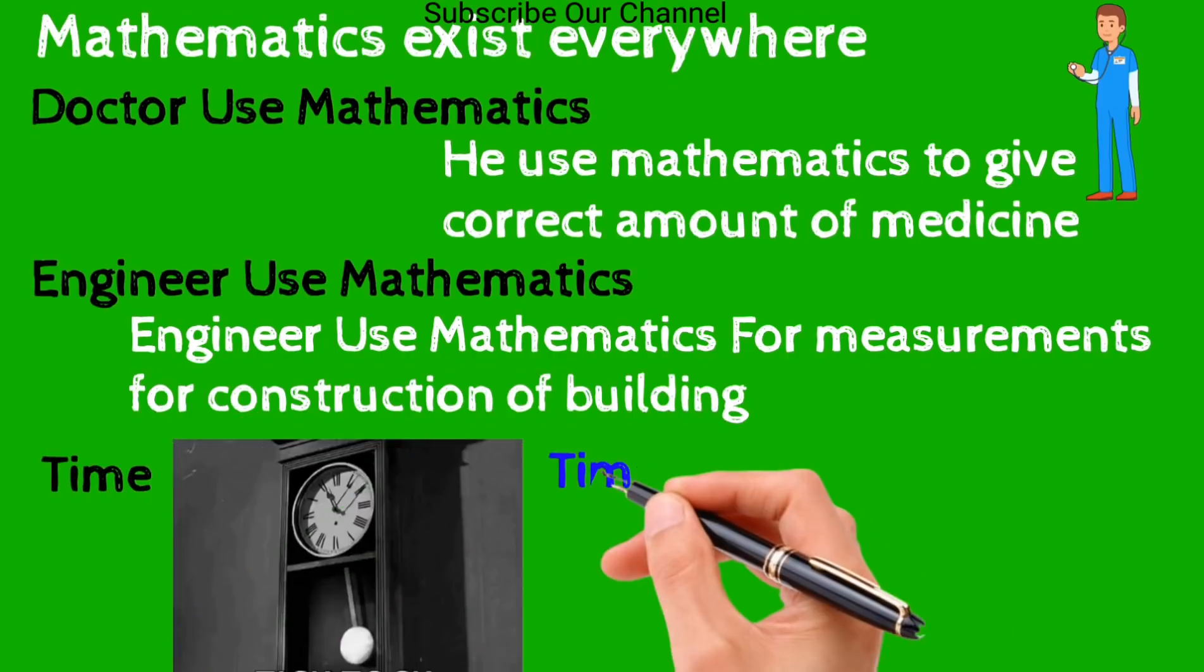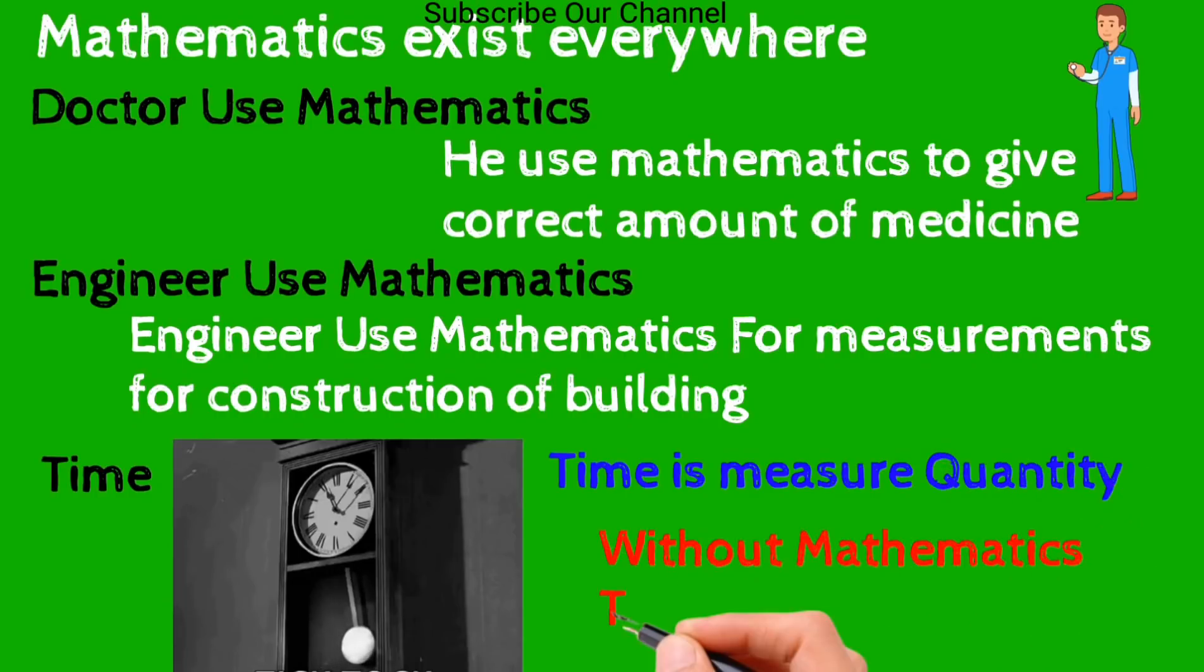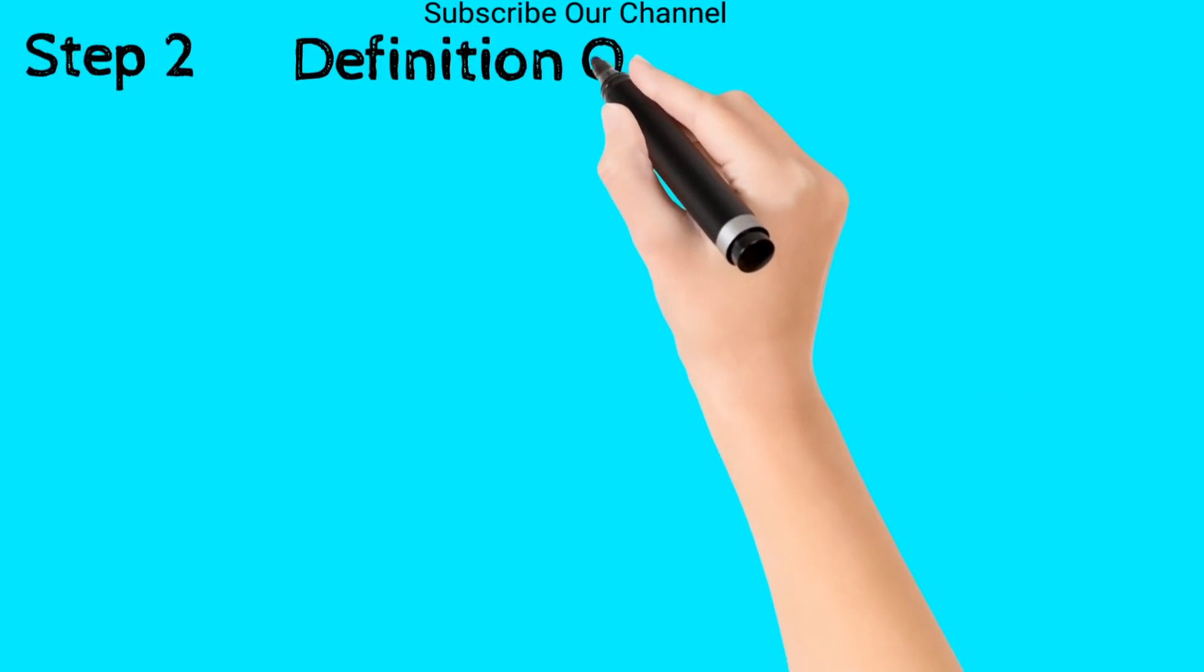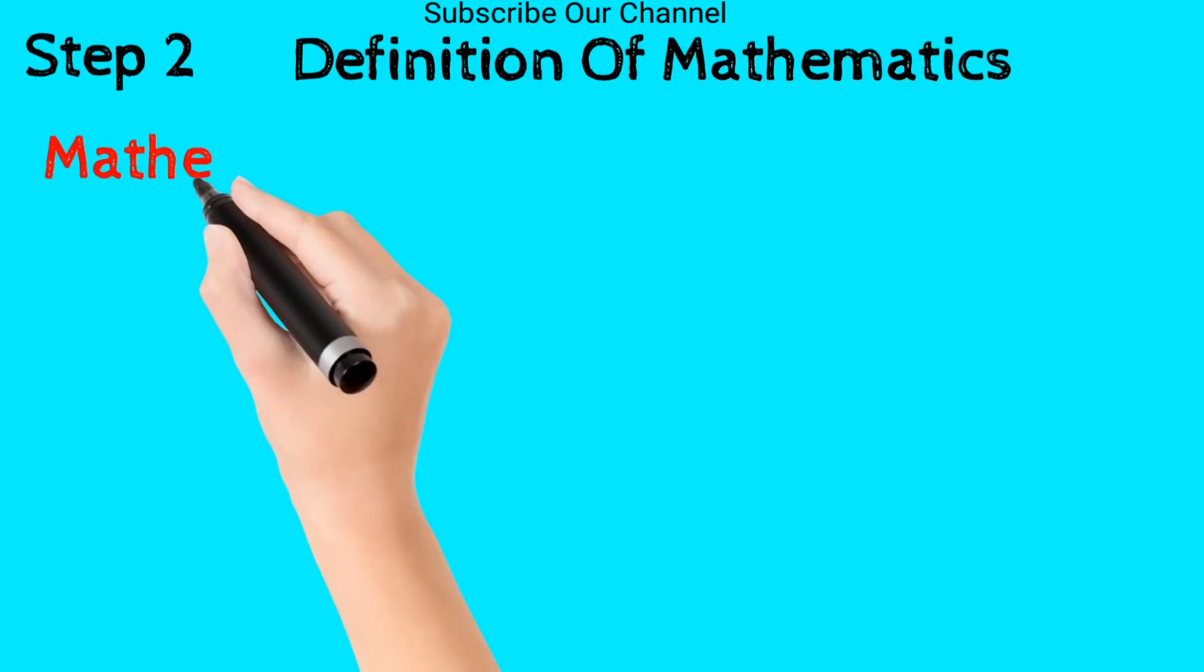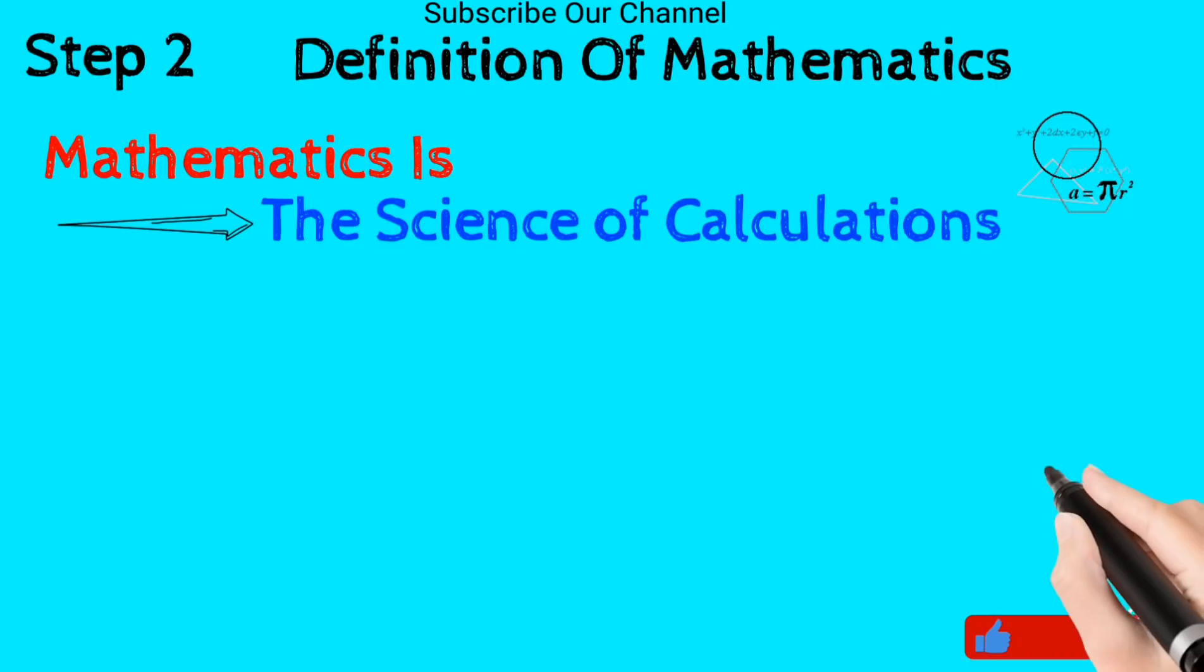Time is a major quantity. Without mathematics, time is not possible. Now step number two: definition of mathematics. Mathematics is the science of calculations. Subscribe to my channel, thank you very much.